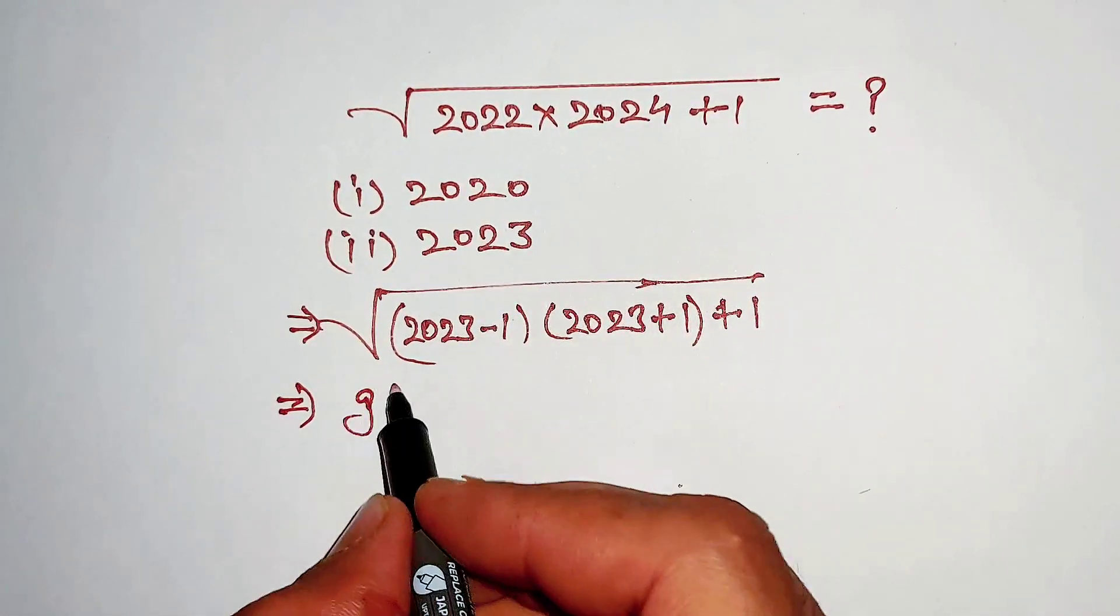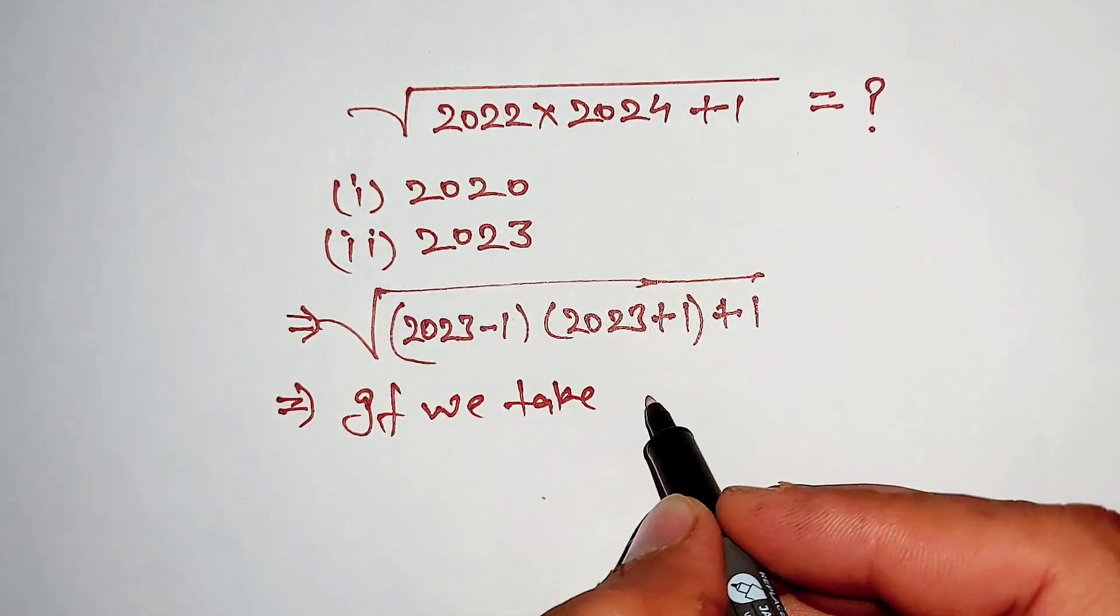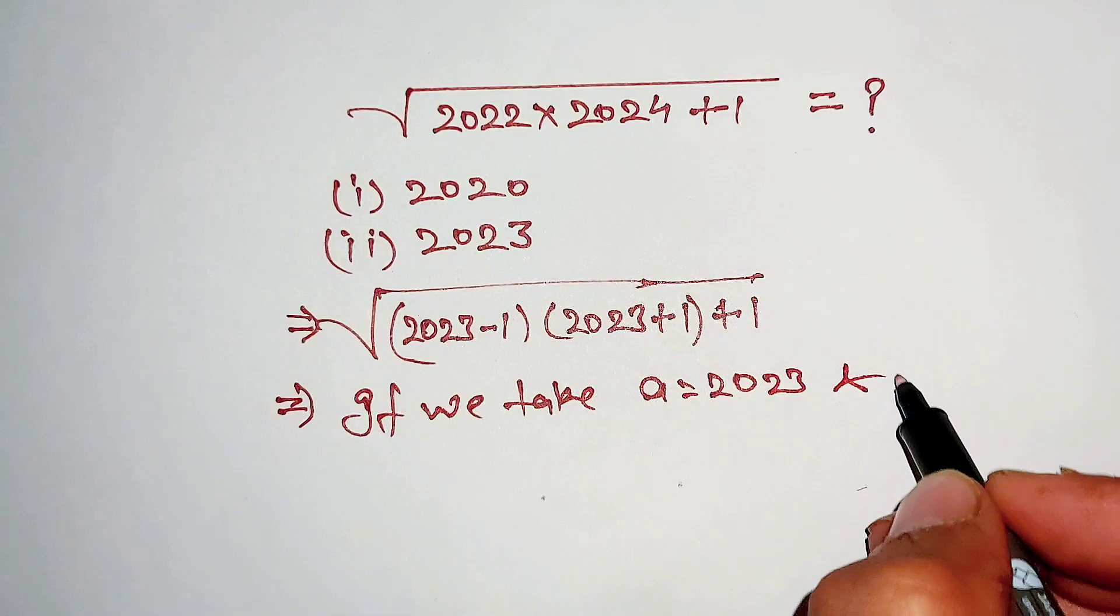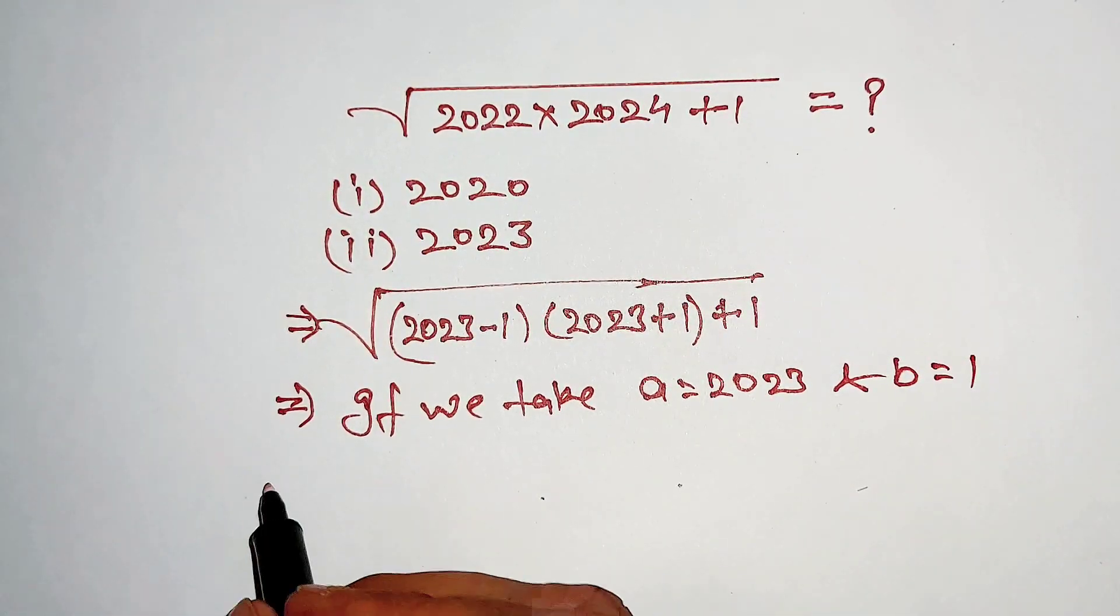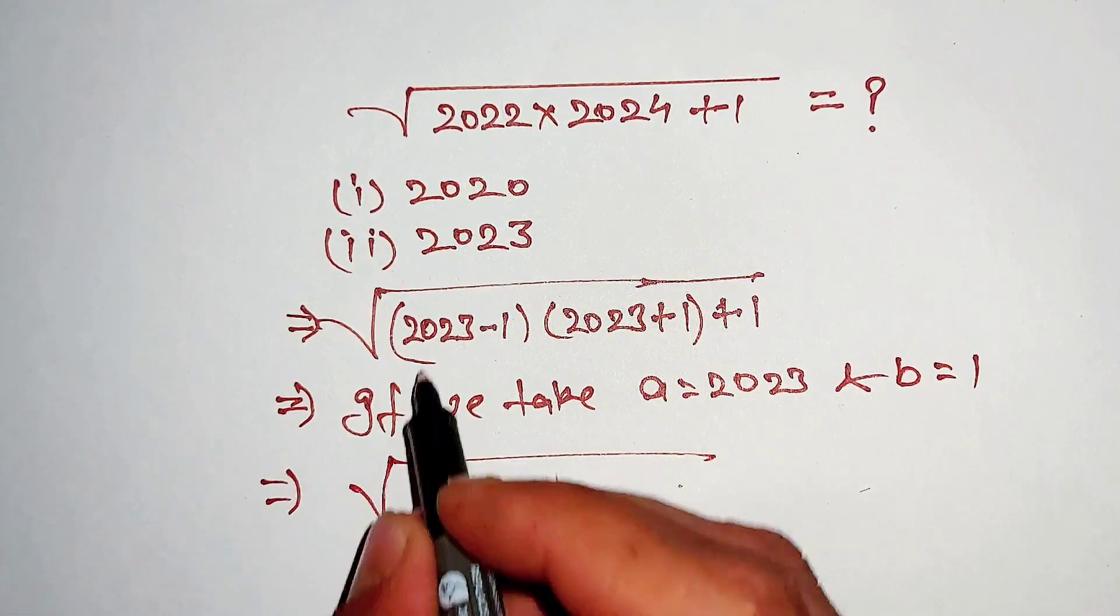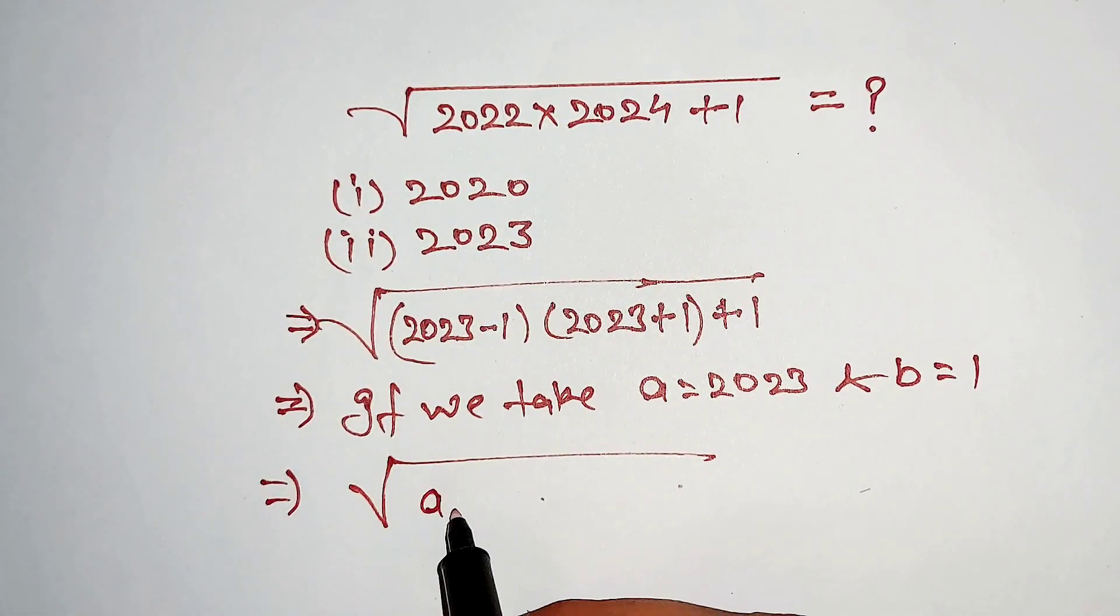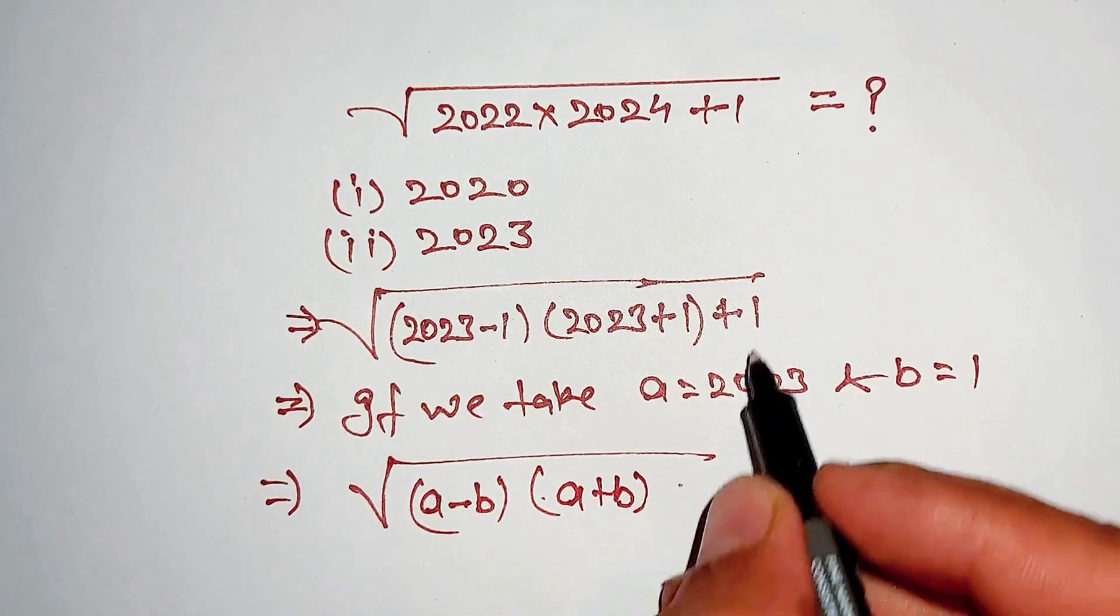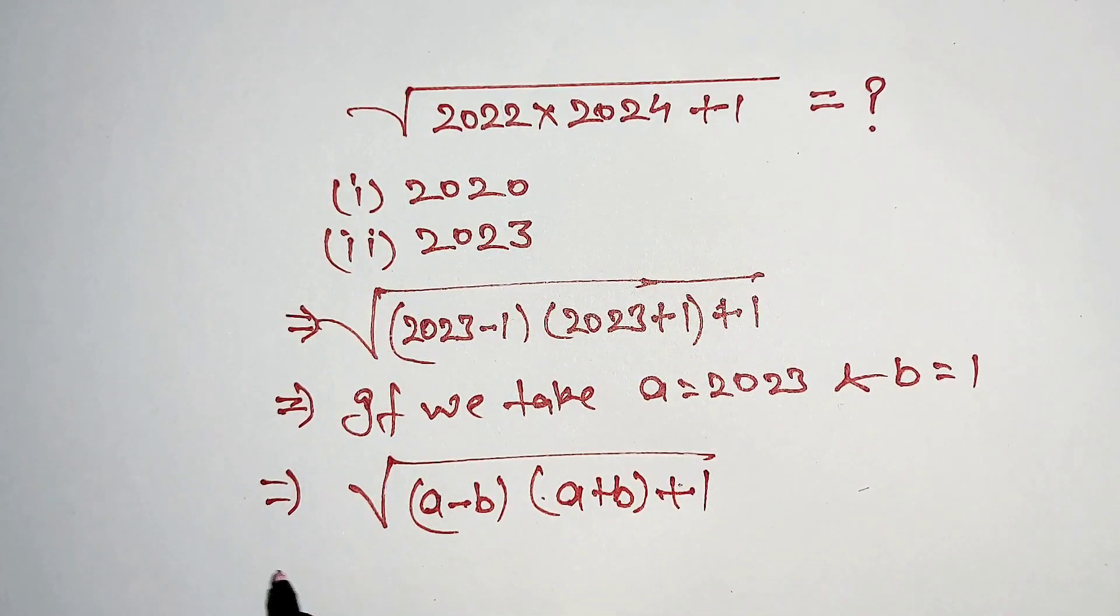Now if we take a equal to 2023 and b equal to 1, if we put this in this expression, this looks like a minus b and a plus b, and same plus 1.